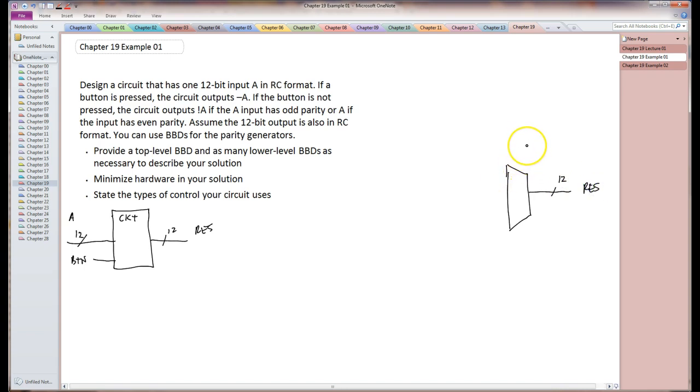So I can fill that in right there. We can say here this is the final output. You can see that button right here is deciding what's going to be output on this. So what is it choosing between? If a button is pressed, the circuit outputs minus A. So this is this first line here.